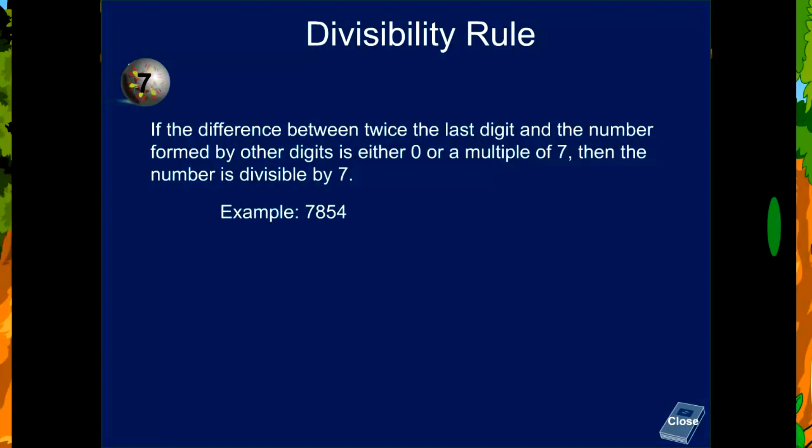Example: 7854. Step 1: Take the last digit, 4. Step 2: Then 2 times the last digit, 2 times 4 equals 8.